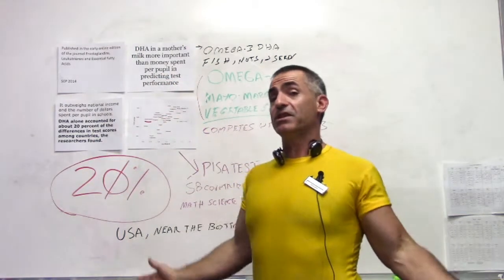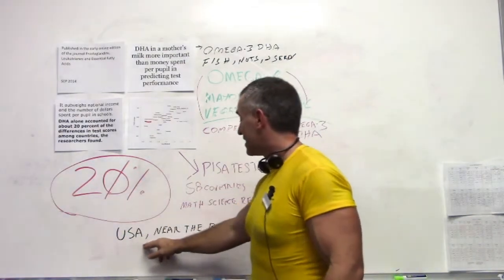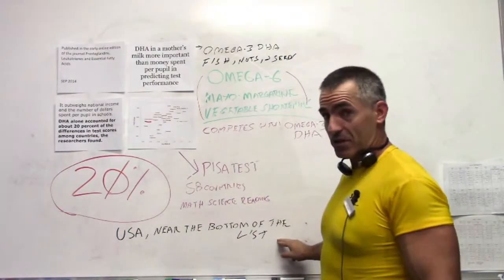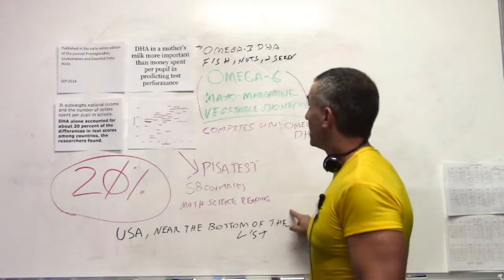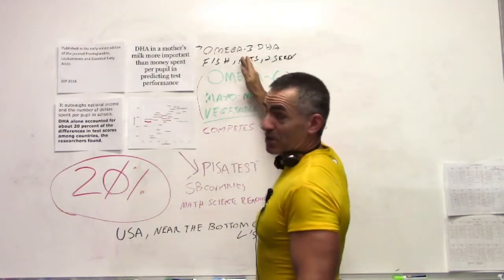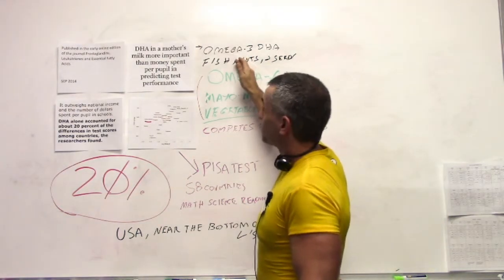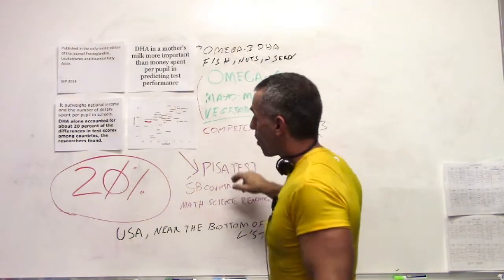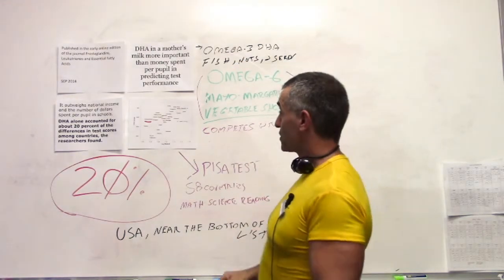Where does the United States fit into that picture? Well, the United States is near the bottom of the list, which means our diet, especially our maternal diet of our children-to-be, is of critical importance to national security in the future of this country.